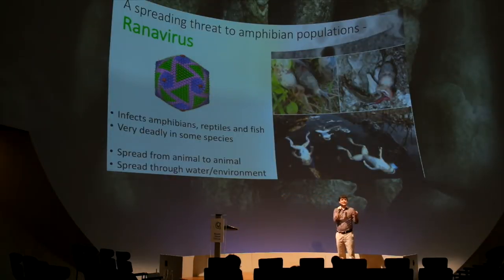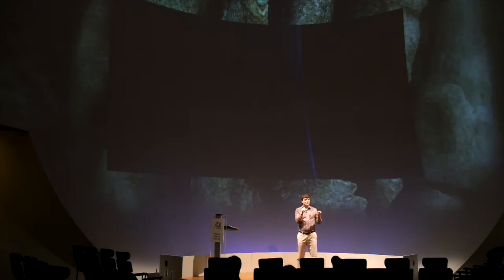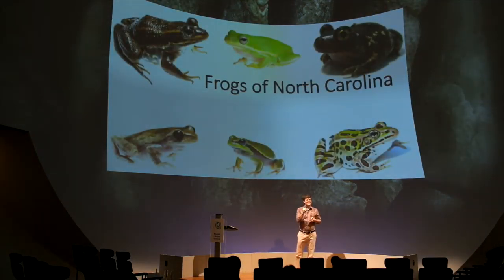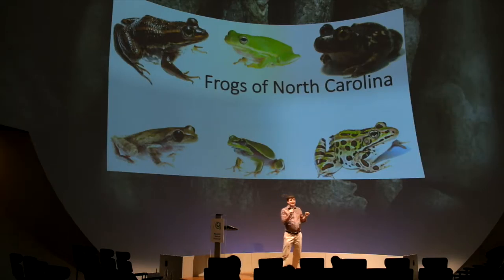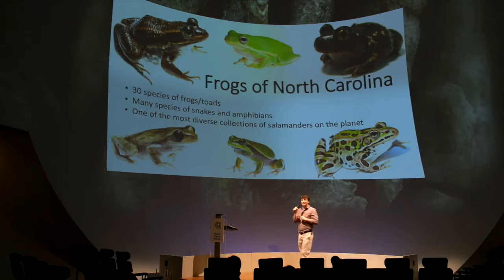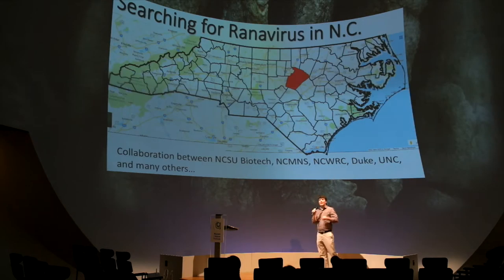As we study ranavirus, the reason we're interested in it particularly in North Carolina — for a moment, use your imagination: pretend you're out on a warm spring evening somewhere in North Carolina. You might hear the voices of many of our native species, which includes 30 different frogs and toads. We also have many different types of reptiles and amphibians, and one of the most diverse collections of salamanders in the world, particularly out in the Great Smoky Mountains. So we have a lot to protect when it comes to amphibians and reptiles.